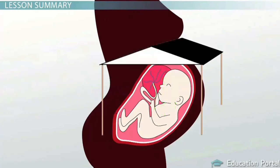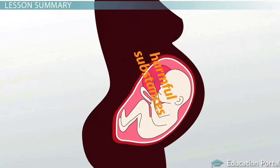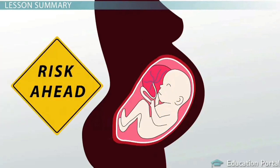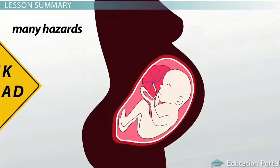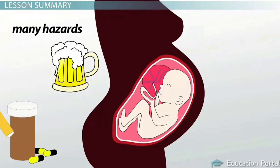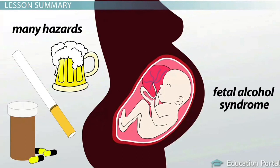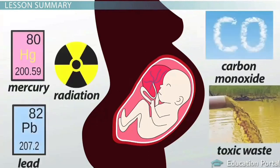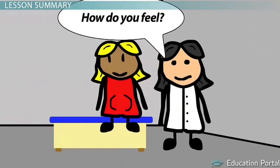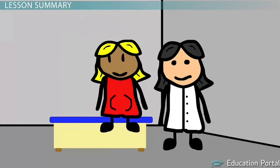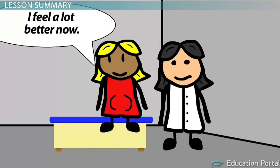Inside the uterus, the unborn child is protected, but harmful substances can still cross the placenta and cause harm. There are many potential hazards to prenatal development, many related to drug, alcohol, or tobacco use — an example is fetal alcohol syndrome. Maternal diseases and environmental concerns such as exposure to radiation are also hazards. Proper prenatal care can greatly reduce the risk of hazards to the prenatal environment.